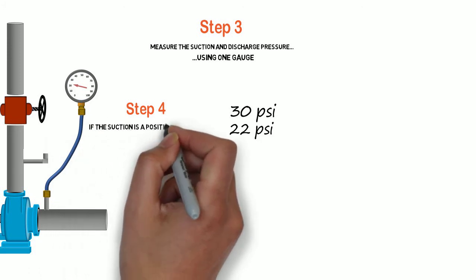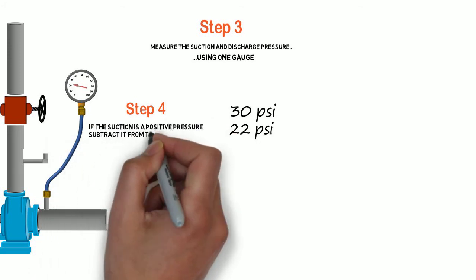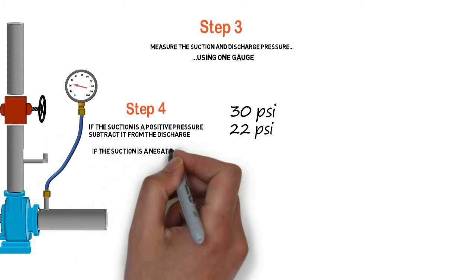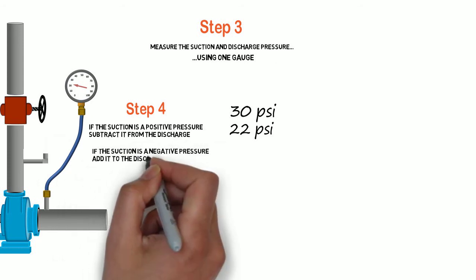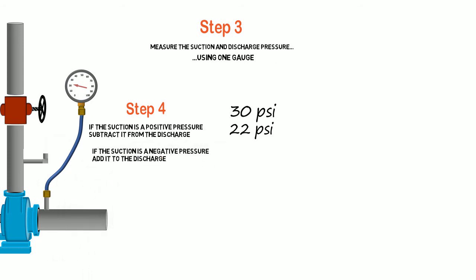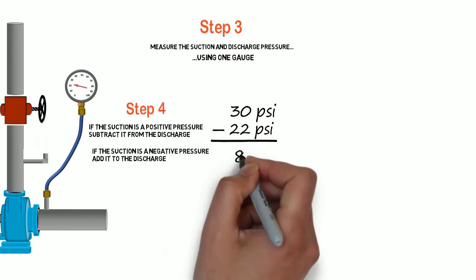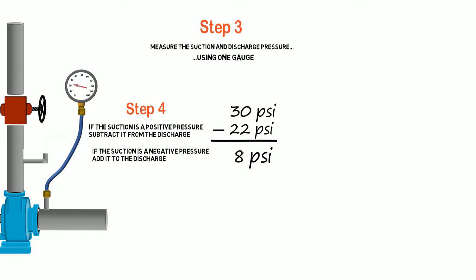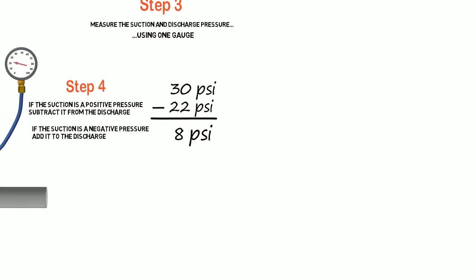Step 4: If the suction is positive, subtract it from the discharge. If the suction is negative, add it. In our case it's positive, so we subtract: 30 psi minus 22 psi equals 8 psi. Pretty simple so far, huh?